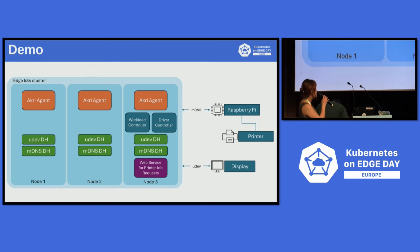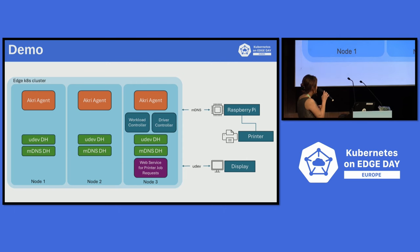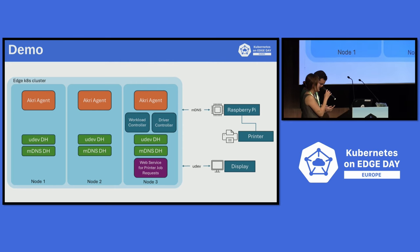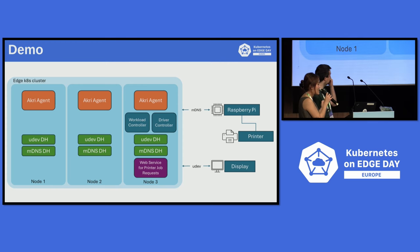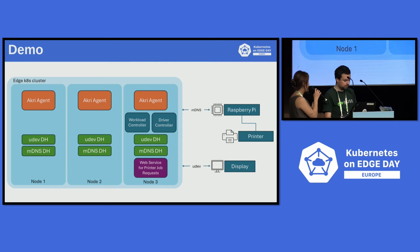We have an edge cluster with three nodes, and we can see that we have Akri deployed with the workload controller and driver controller on one of the nodes, as well as a web service for taking in printer job requests. We're using the MDNS discovery handler to connect to our Raspberry Pi, which is connected to our printer, and also a UDev discovery handler, which is connected to our display. We're going to have a QR code that you can scan to put in a printer job request, and hopefully that will then print something.